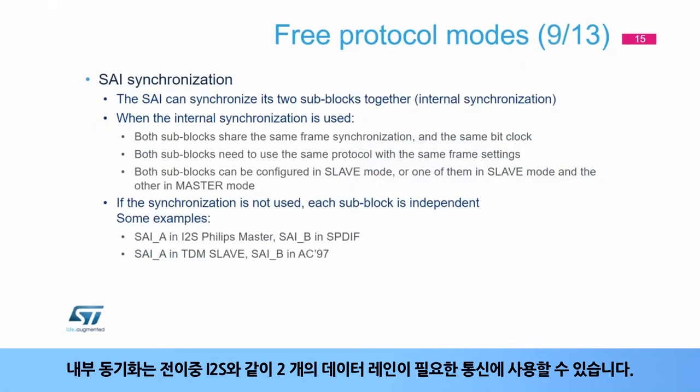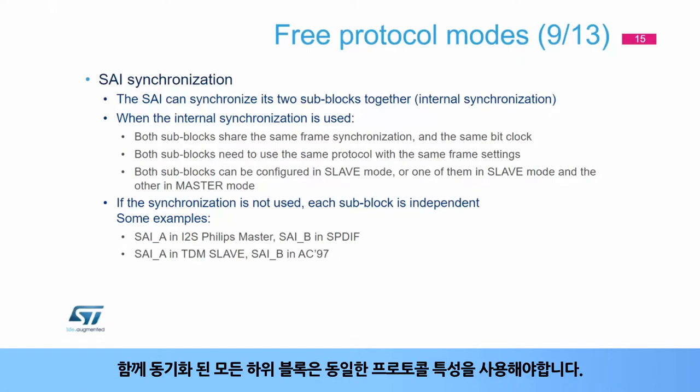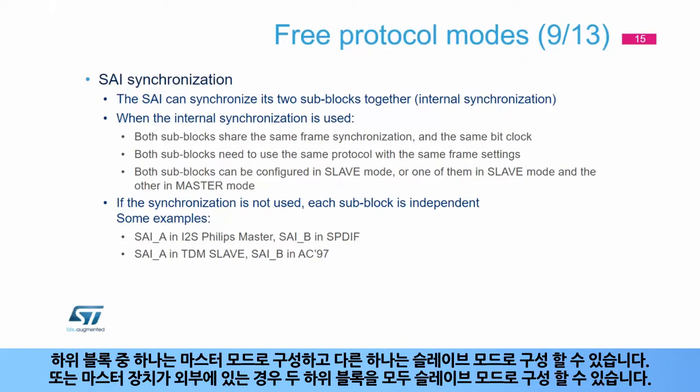The internal synchronization can be used for communications needing two data lanes, such as full duplex I2S. All the sub-blocks synchronized together must use the same protocol characteristics. One of the sub-blocks can be configured in master mode while the other is in slave mode, or it is possible to configure both sub-blocks in slave mode if the master device is external.